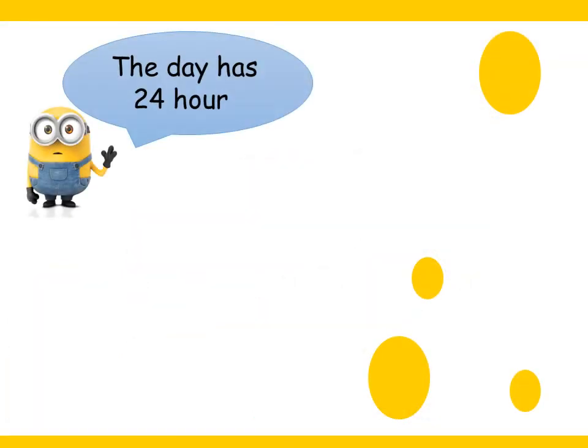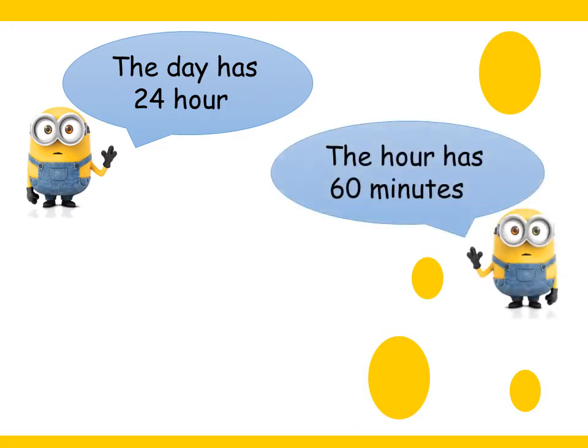How many hours per day? The day has 24 hours. The day has how many hours? 24. The hour has how many minutes? 60 minutes. So each hour has 60 minutes.